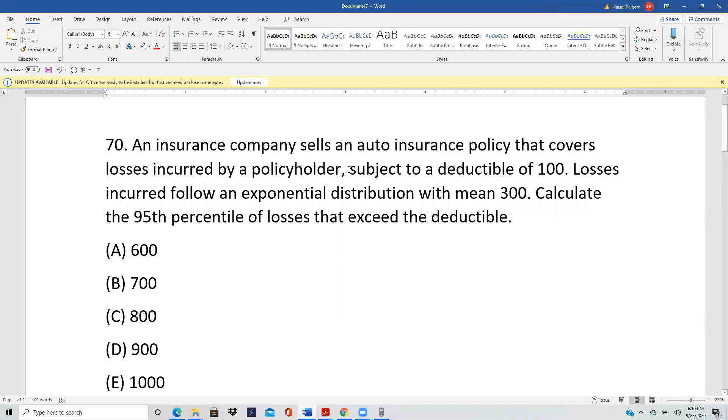An insurance company sells an auto insurance policy that covers losses subject to a deductible of 100. Losses follow exponential distribution with mean 300. Calculate the 95th percentile of losses that exceed the deductible.